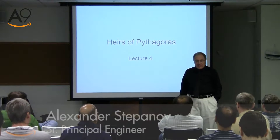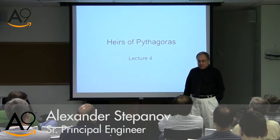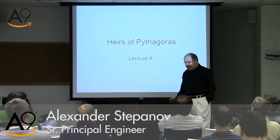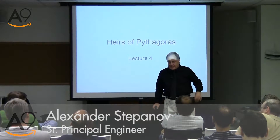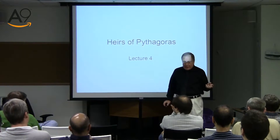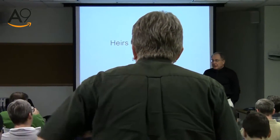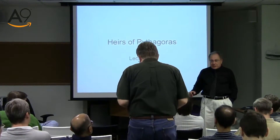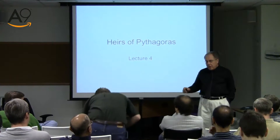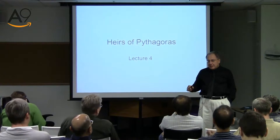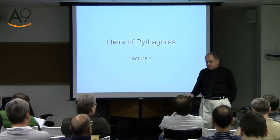Last lecture we looked at groups, very fundamental algebraic structures. Things like groups are called algebraic structures, and we proved the remarkable theorem called Lagrange's theorem, which explained a lot of things we encountered in journey one — things like the little Fermat theorem and Euler's theorem.